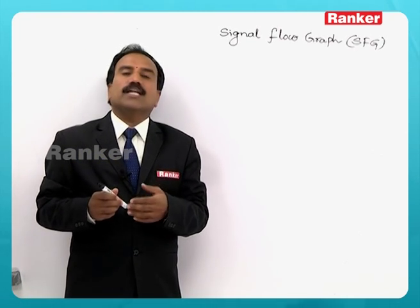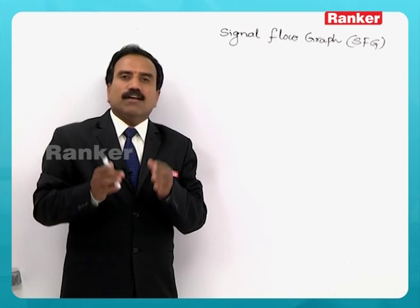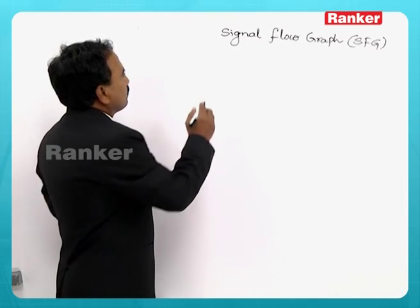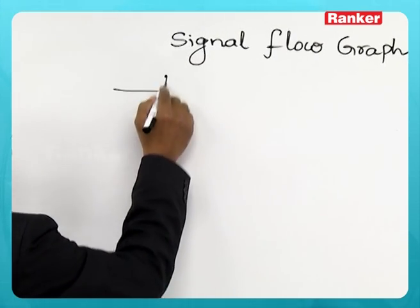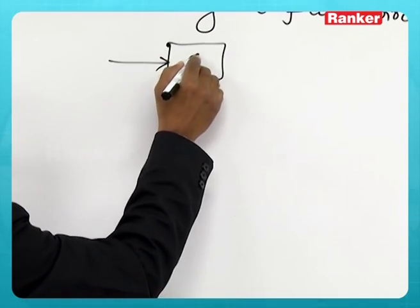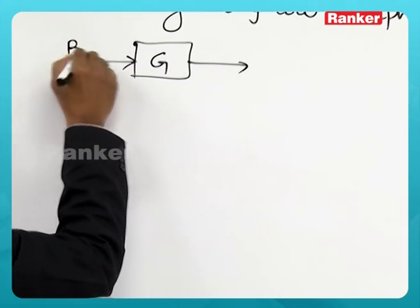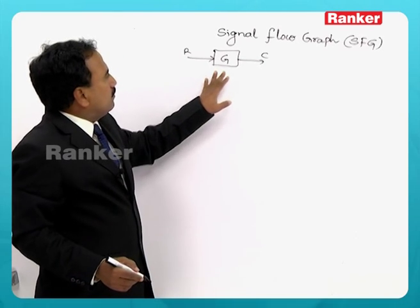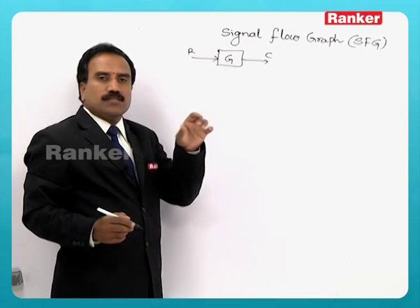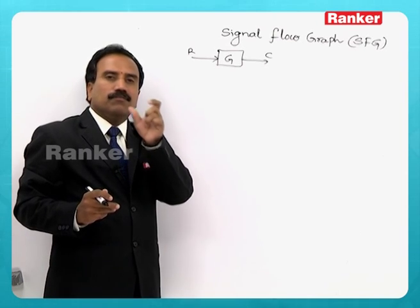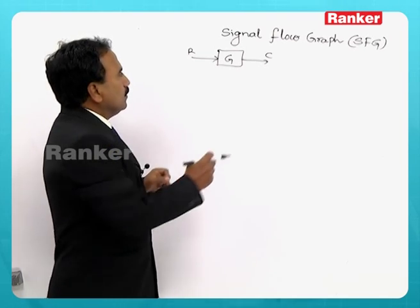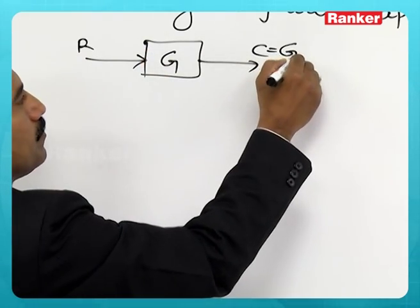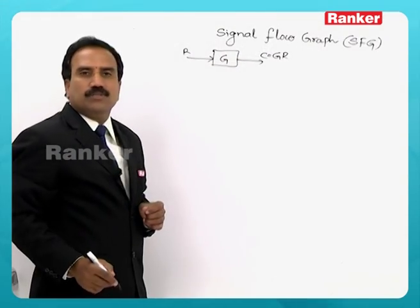Signal flow graph is not like that. It is a graphical representation of a system consisting of only nodes and branches. For example, if you consider a block G with input R and output C, as discussed in the block diagram, the block represents the functional description of that component, so C equals G times R — that is the output you get.